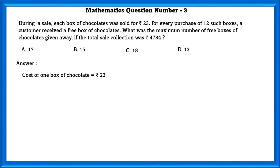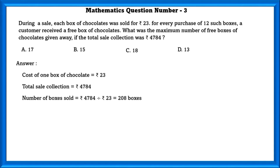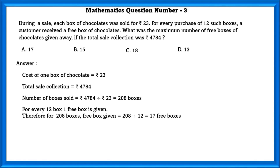Cost of one chocolate box is equal to Rs. 23. Total sale collection is equal to Rs. 4,784. Number of boxes sold is equal to 4,784 divided by 23, that is 208 boxes. So, for every 12 boxes, one free box is given. Therefore, for 208 boxes, free boxes given is equal to 208 divided by 12, that is 17 boxes.